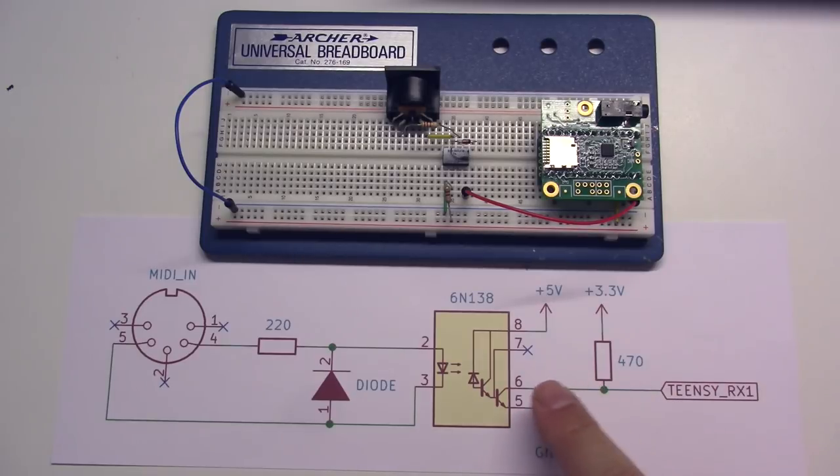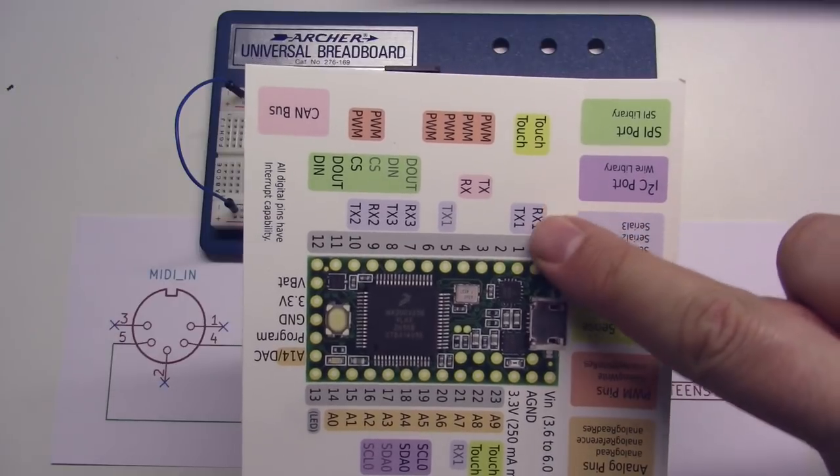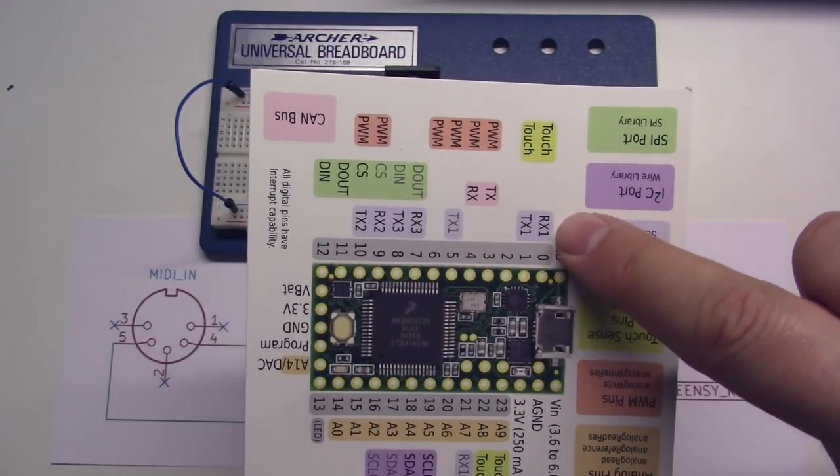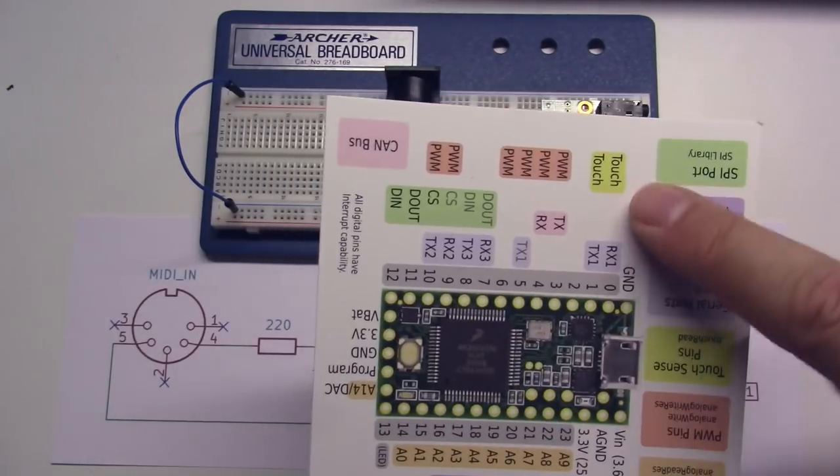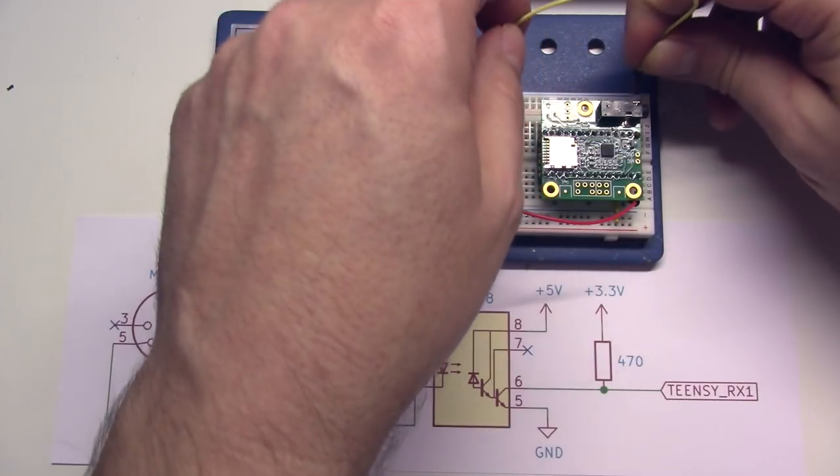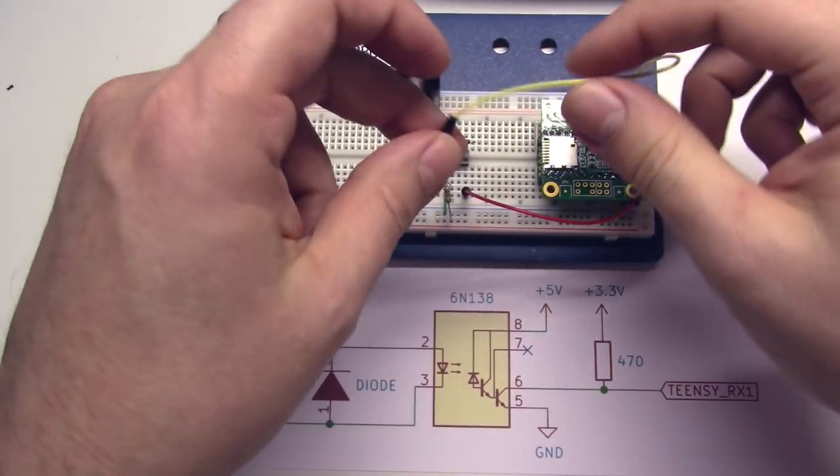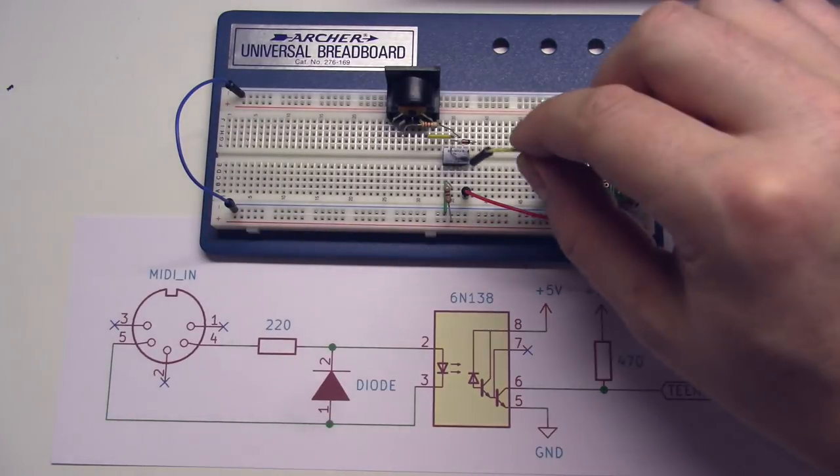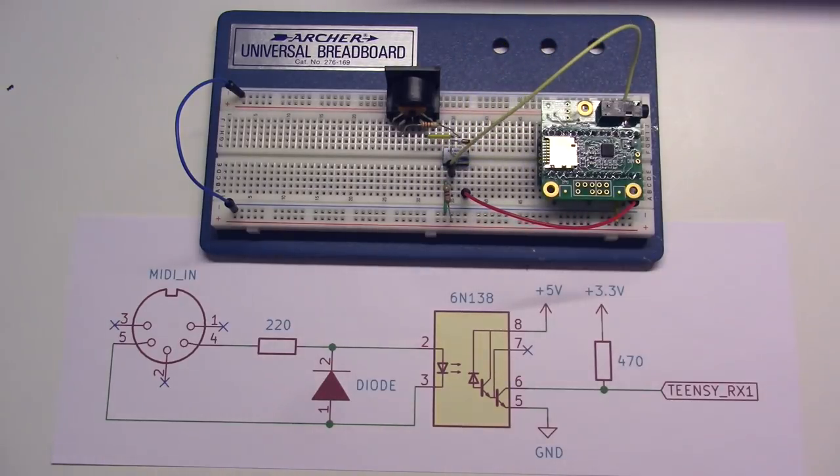And finally, we need to connect pin six on the optocoupler to the Teensy's RX1 pin. If we look on the board here, RX1 is actually the second pin from this corner right to ground. And RX stands for receive, so that's the serial receive pin. So let's take a jumper wire, connect it to that pin, and then the other side will go to pin six on our optocoupler. And there you go—we are finished.